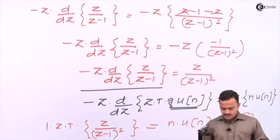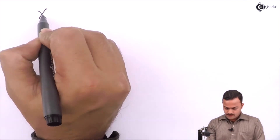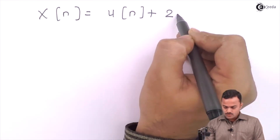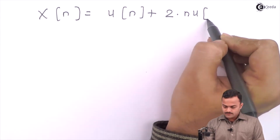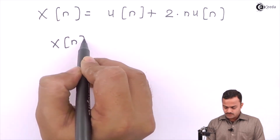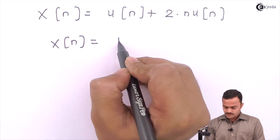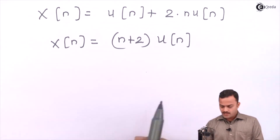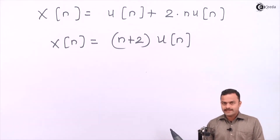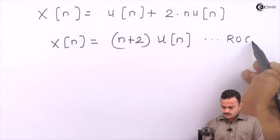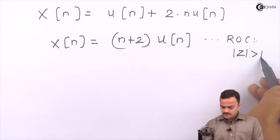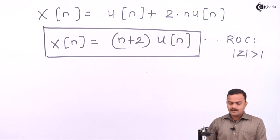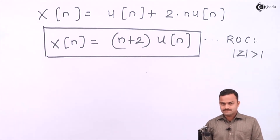Substituting both results, x(n) = u(n) + 2·n·u(n), and simplifying gives x(n) = (n + 2)u(n). Since it is just u(n), the ROC condition is also satisfied, and the ROC is |z| greater than 1. We have seen how to deal with repeated factors in inverse z-transforms. Thank you.